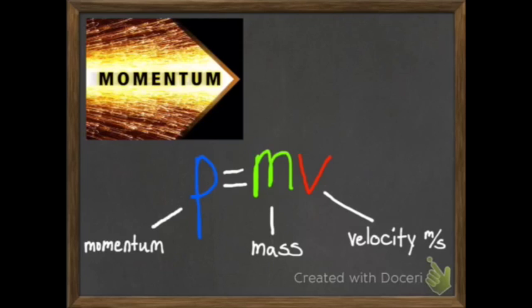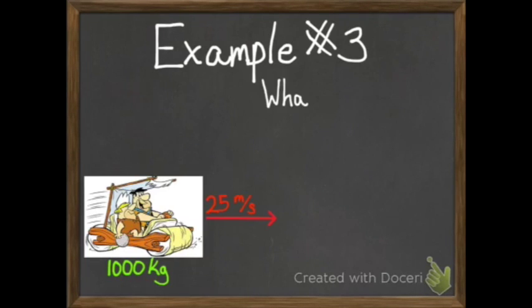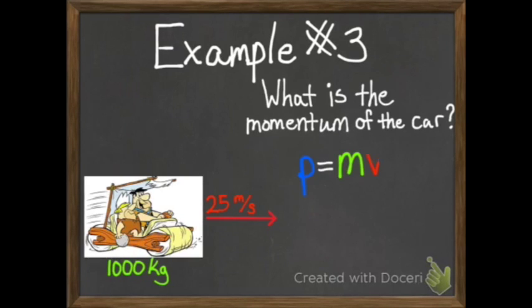Here's our example: we've got Fred and Barney driving their car, which weighs 1,000 kilograms, and their velocity is 25 meters per second. The question asks: what is the momentum of the car? How we figure out what equation to use — look at what it's asking us. It asks for the momentum, so that's a hint to use P equals MV. Also, notice that in our last two examples the units for acceleration were in meters per second squared. This one is only 25 meters per second — no squared — which means it has to be a velocity. So that confirms we use P equals MV.